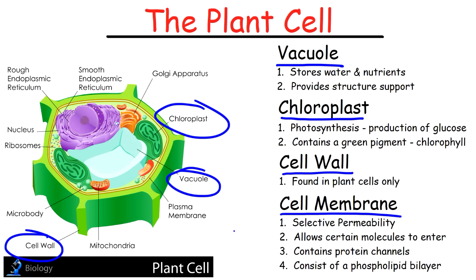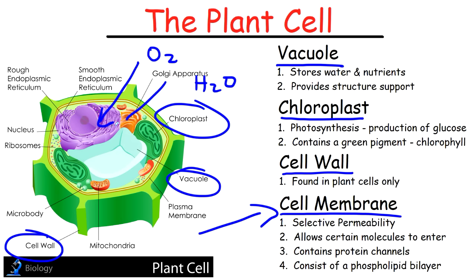Both the animal cell and the plant cell contain a cell membrane. The cell membrane consists of a phospholipid bilayer and has a property known as selective permeability, which means it allows some things to enter while preventing the passage of others. Small molecules like oxygen gas and water can diffuse right through the plasma membrane, but large molecules like glucose and ions have to travel through protein channels. The cell membrane is basically like the gate of the cell.